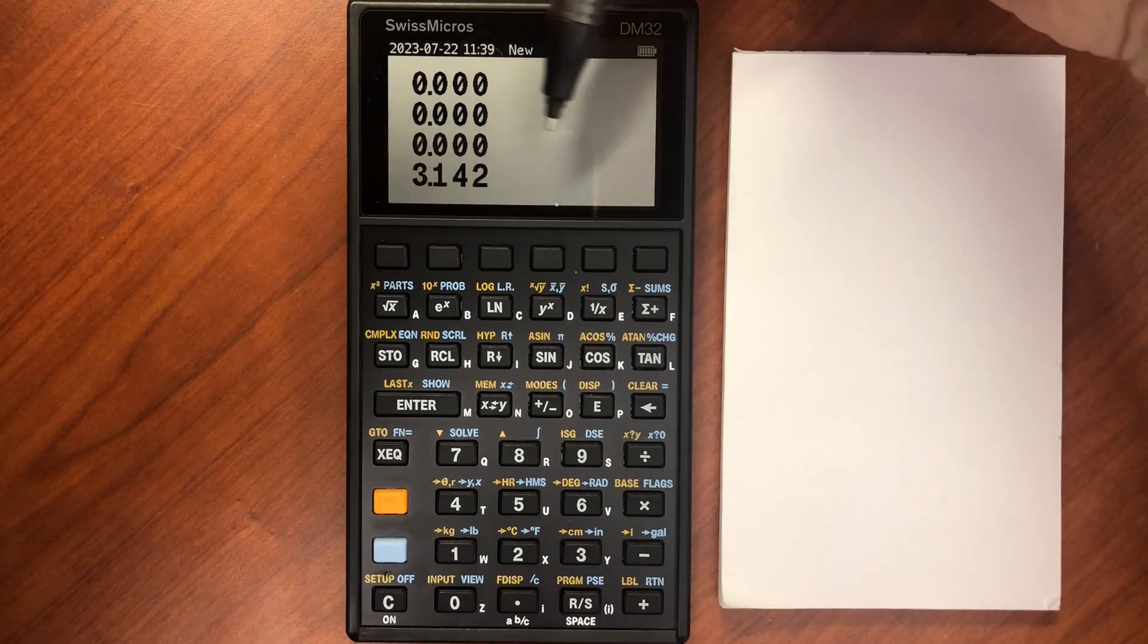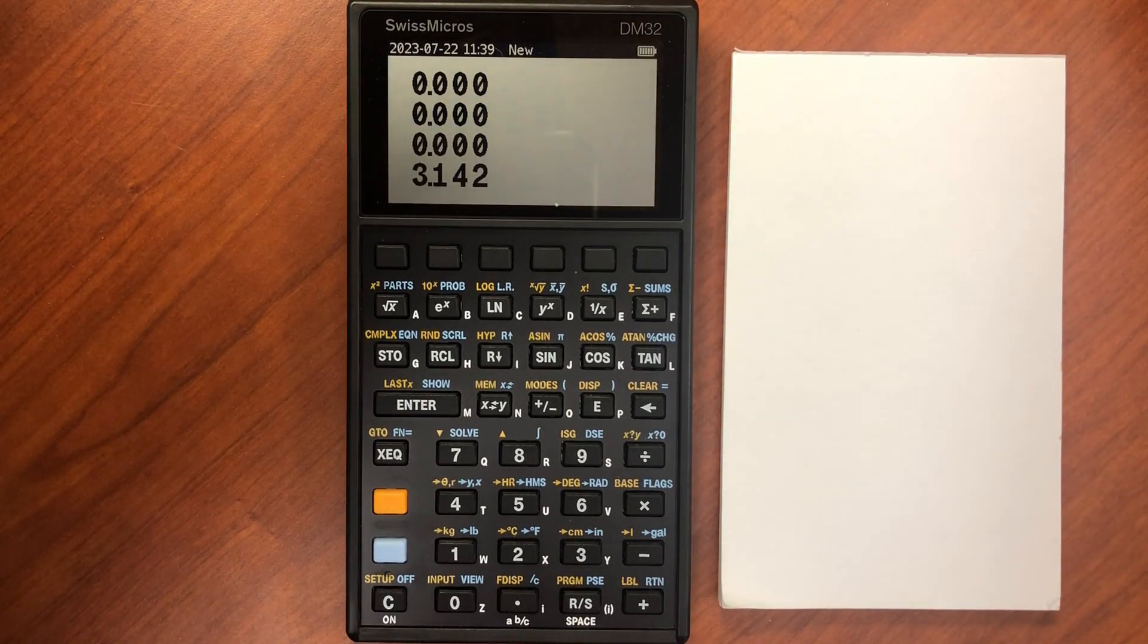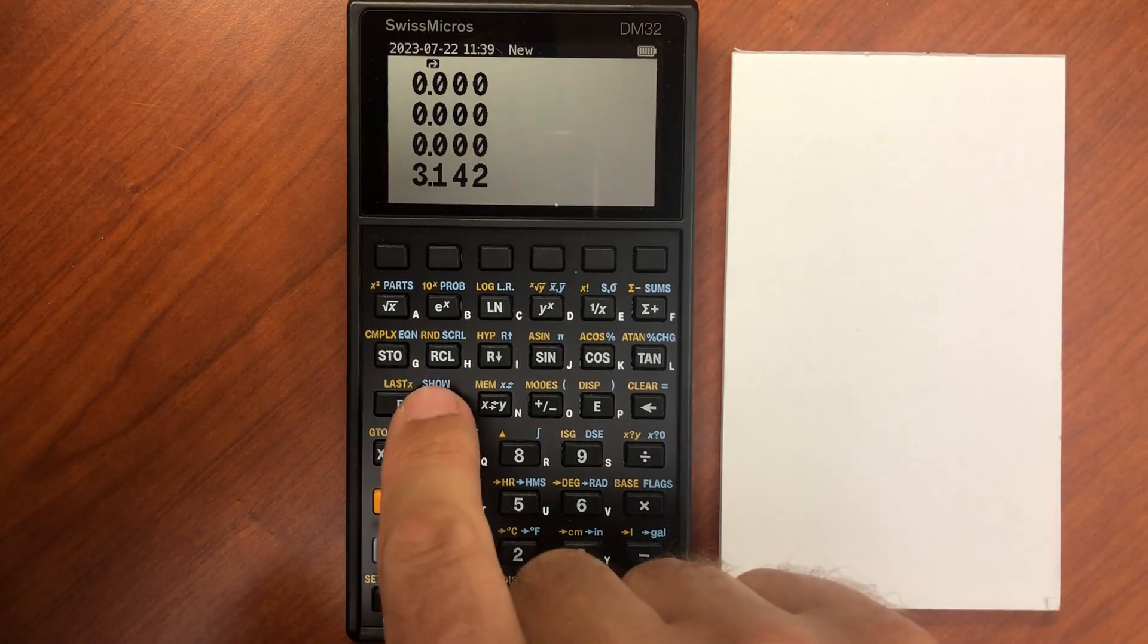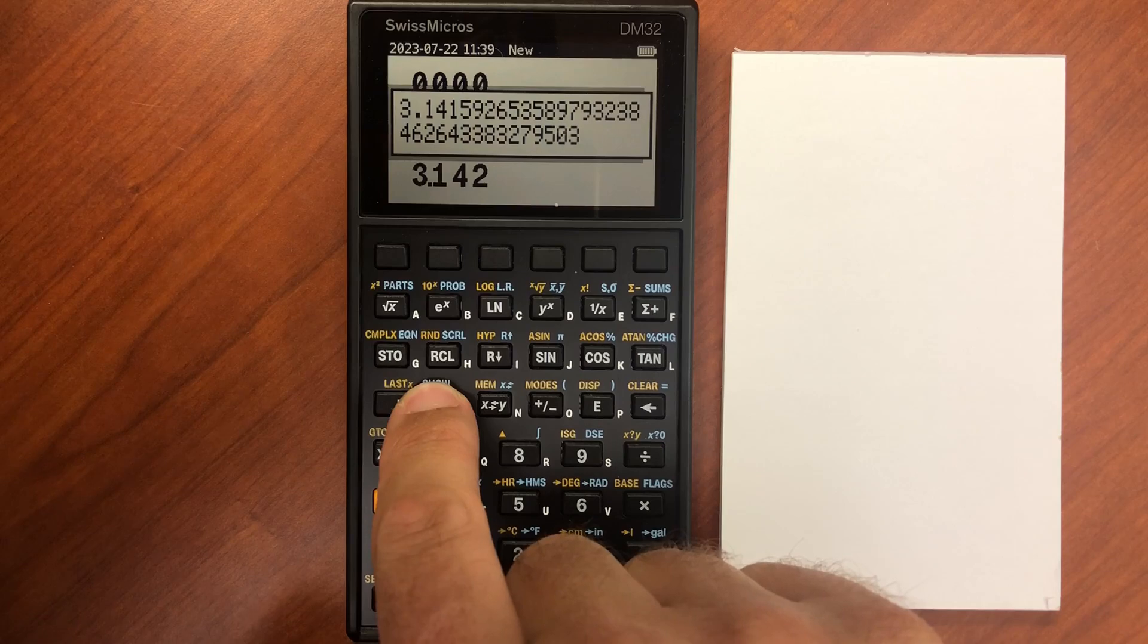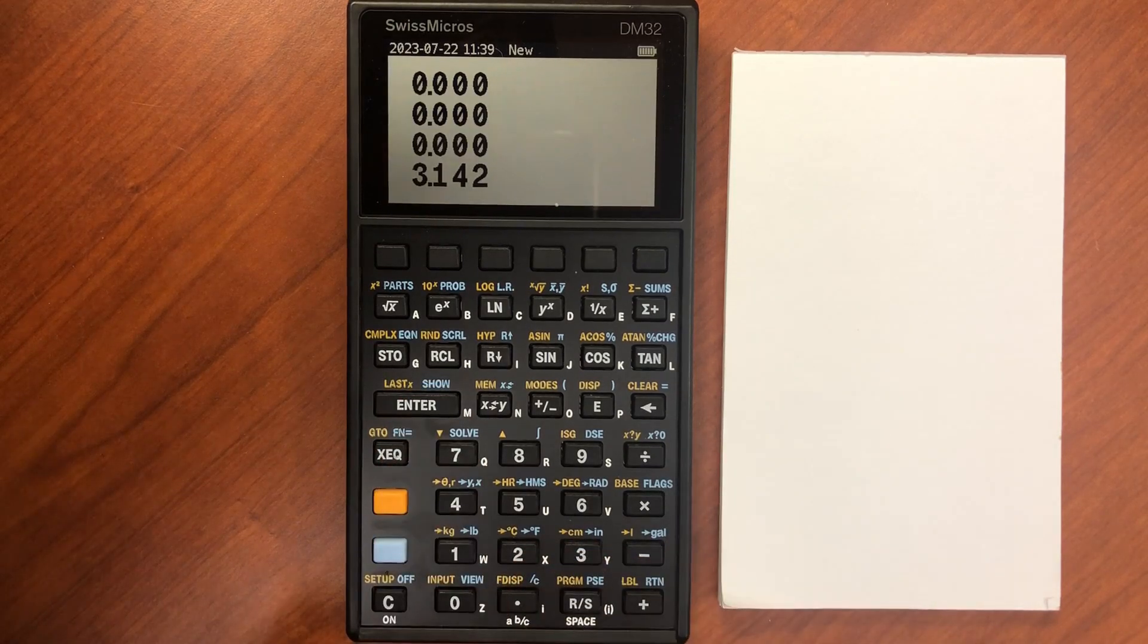It rounds on the display, but it's not actually rounded in the calculator's memory or operations. I can show all of it by going to blue shift show, and it shows me the entire value that is stored to the full precision the calculator is capable of.